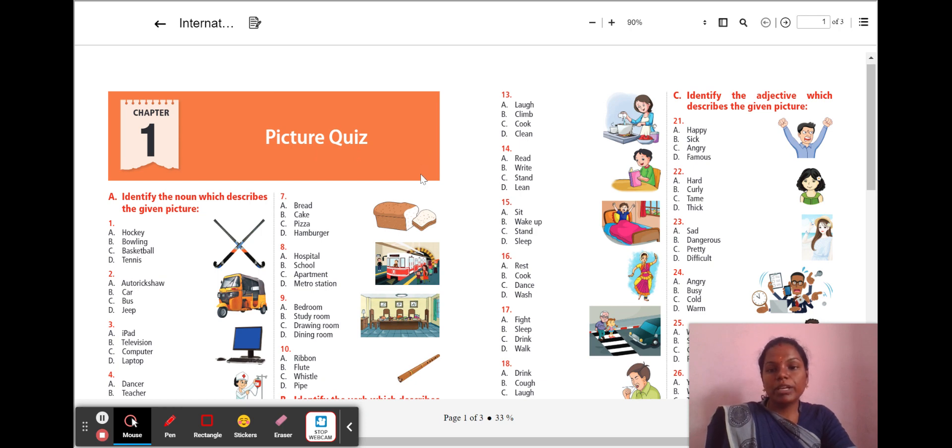All these chapters are based on the grammars that we already studied for them. Let's move to chapter 1, picture quiz. In this chapter, images will be given. We have to select the name of the image, action of the image and describing word for the image.